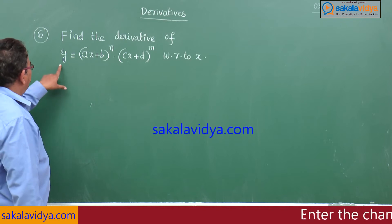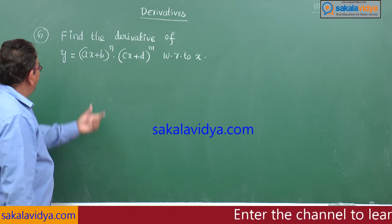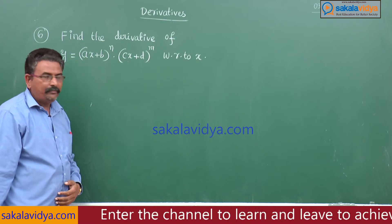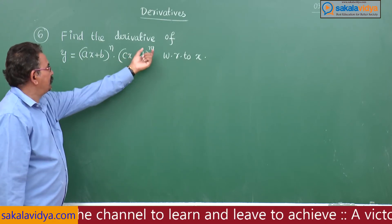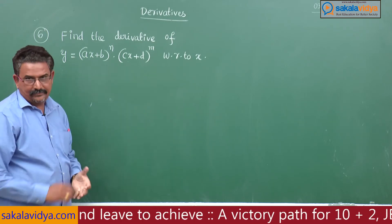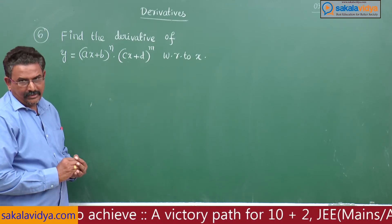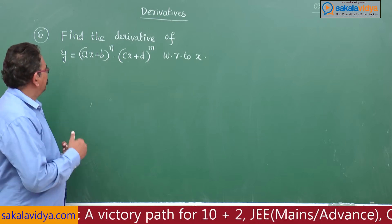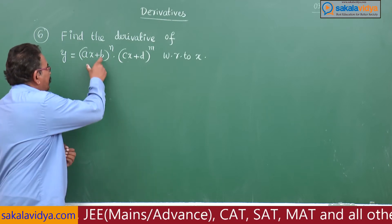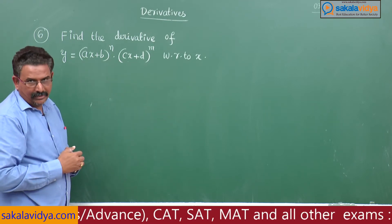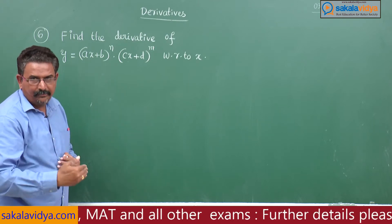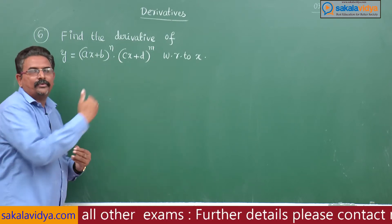Find the derivative of y = (ax + b)^n multiplied by (cx + d)^m with respect to x. Observing this problem, it is the product of two functions: (ax + b)^n and (cx + d)^m.